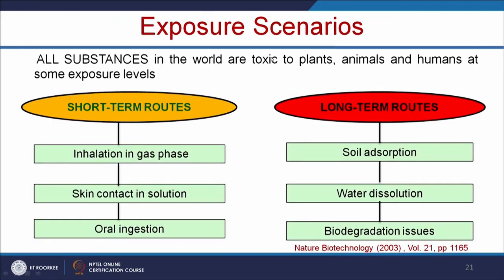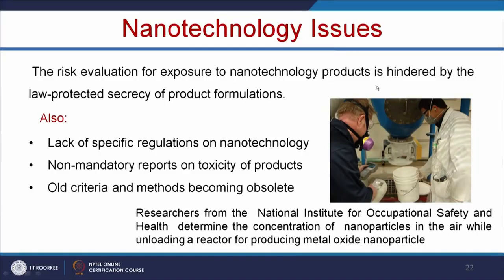Let us see the various exposure scenarios. All substances are toxic to plants, animals, and humans at some exposure levels. There are two routes: short-term routes — mainly due to inhalation, gas phase, skin and solution contact, and oral ingestion — and long-term routes, mainly due to soil adsorption, water dissolution, and biodegradation issues. Risk evaluation for exposure to nanotechnology products is hindered by the law of protected secrecy of product formulation, lack of specific regulations on nanotechnology, and non-mandated reports on toxicity. Researchers from the National Institute for Occupational Safety and Health are determining the concentration of nanoparticles in air while unloading reactors producing metal oxide nanoparticles.